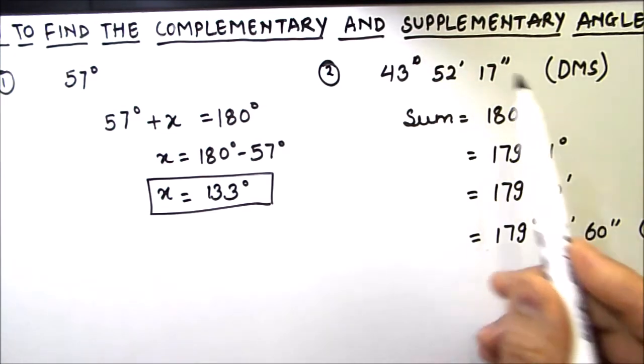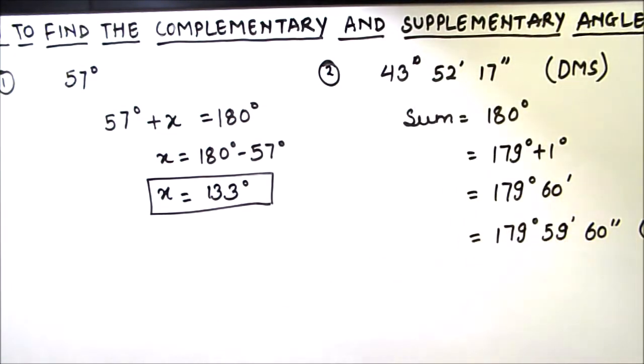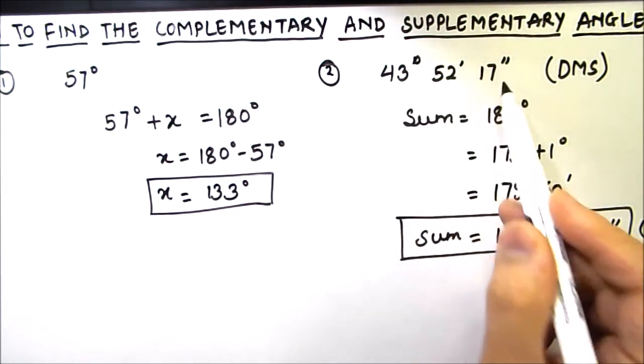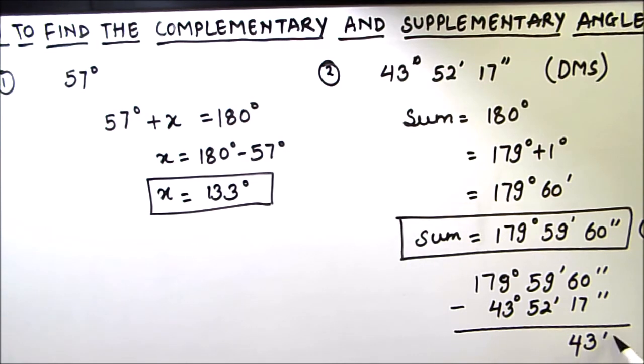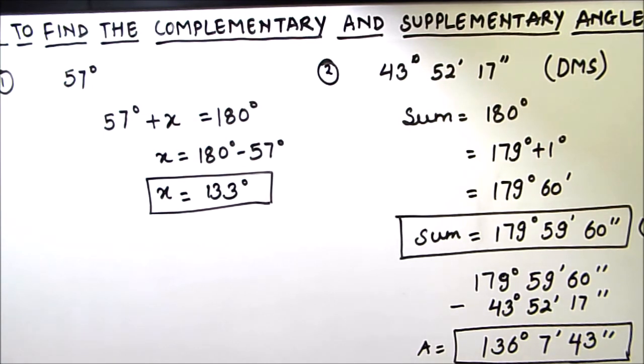So for finding the supplement to this angle, we need to subtract this angle from 179 degrees 59 minutes 60 seconds. We subtract 43 degrees 52 minutes and 17 seconds. So this is 43 seconds, this is 7 minutes, and this is 136 degrees. This is our final answer. So this is how when a supplementary angle is given in DMS form, we need to find the sum in DMS form and subtract that angle from the sum to get the other supplementary angle.